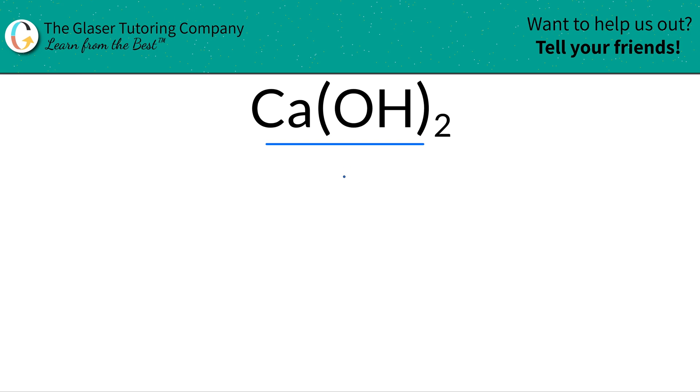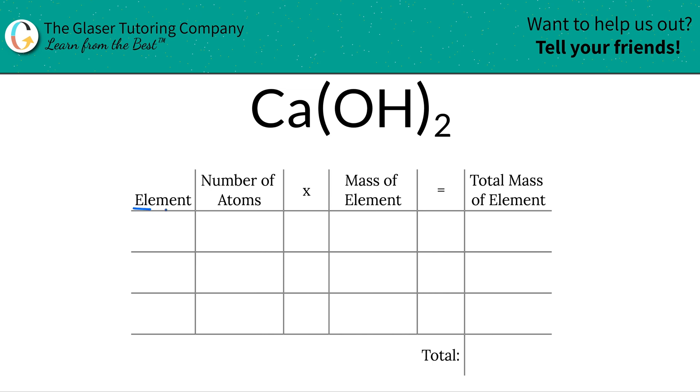It's going to be very quick. Watch. I'm going to use this table to help us out. So the first thing is we're going to identify the elements in the compound. So we have calcium, Ca, we have oxygen, O, and we have hydrogen, H.